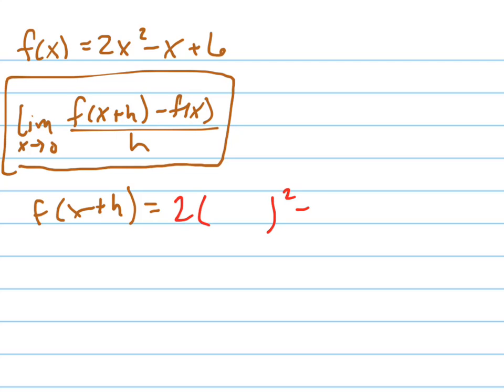2 squared times, so it's 2x plus h squared, so I'm going to put x plus h in there, minus x plus h plus 6. So notice that I'm plugging everywhere I see an x, I'm plugging in x plus h. So anywhere I saw x for f of x, I'm plugging x plus h in instead, and so that's that.